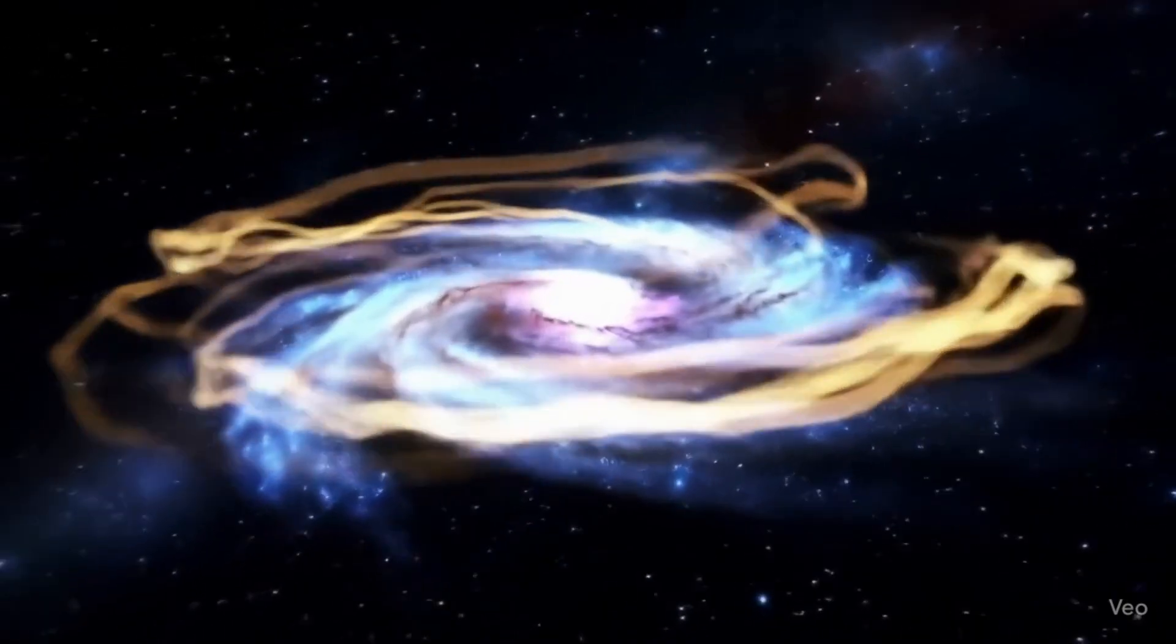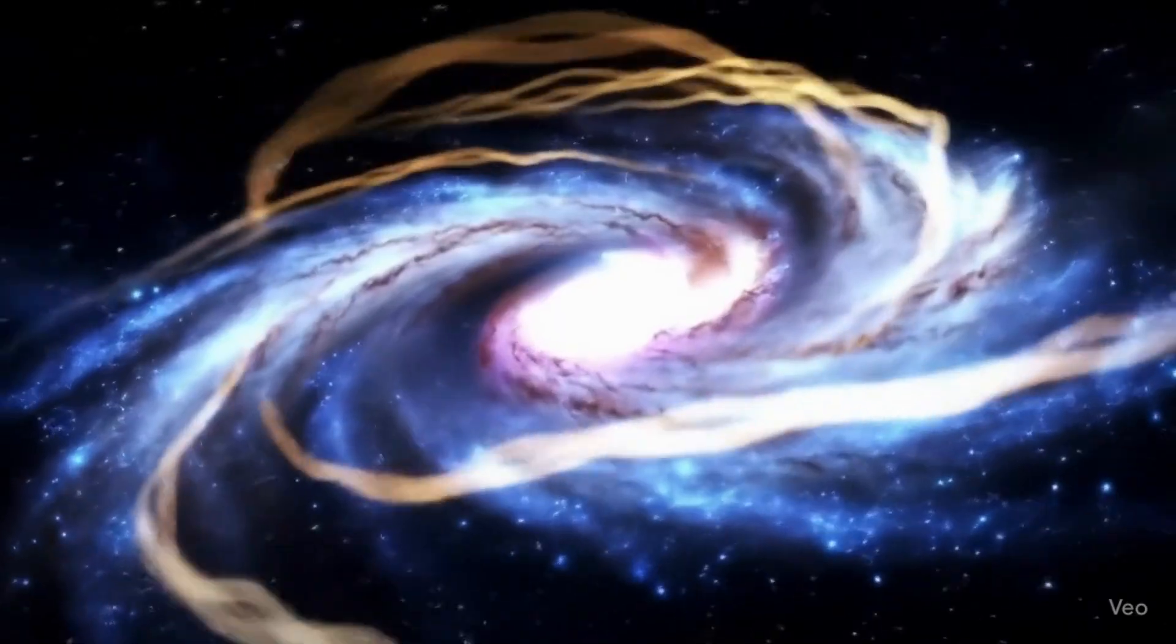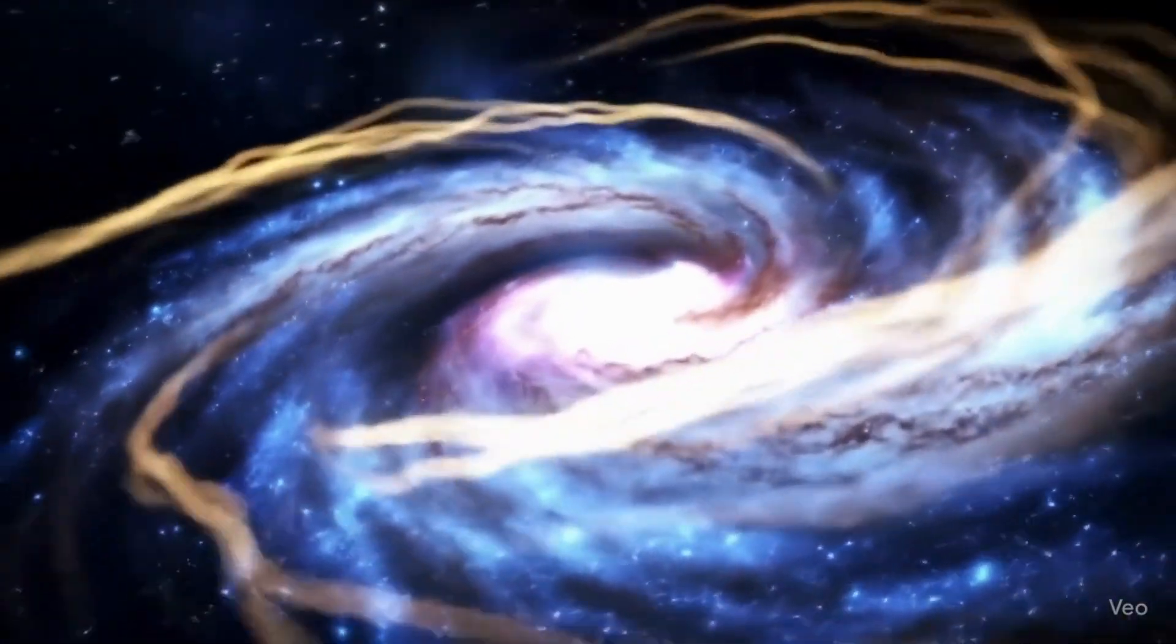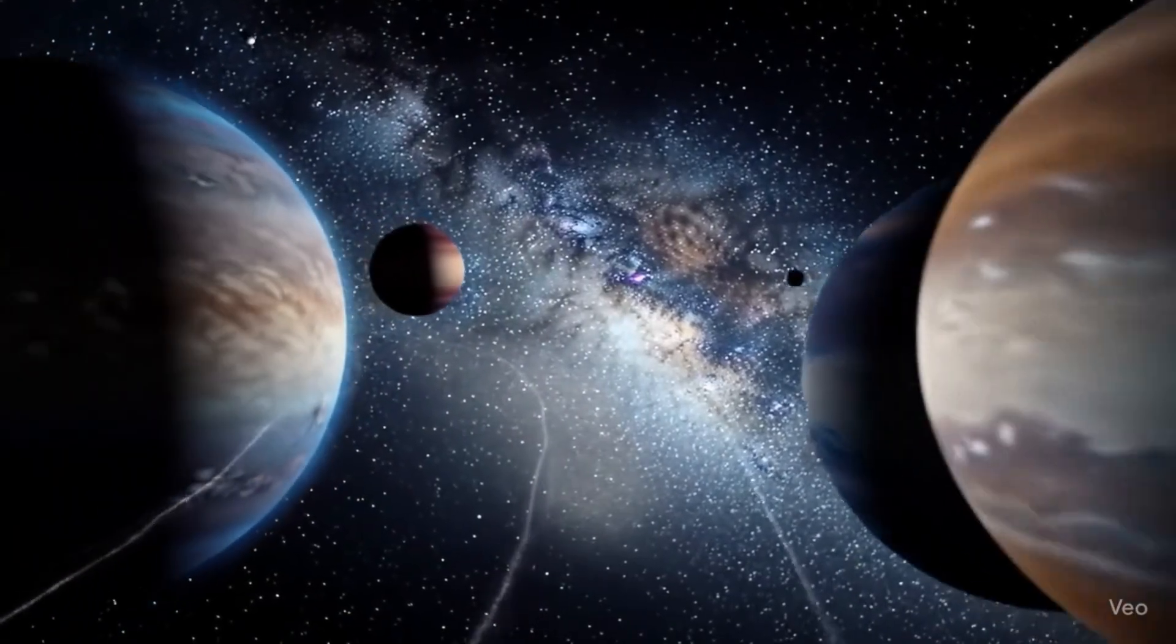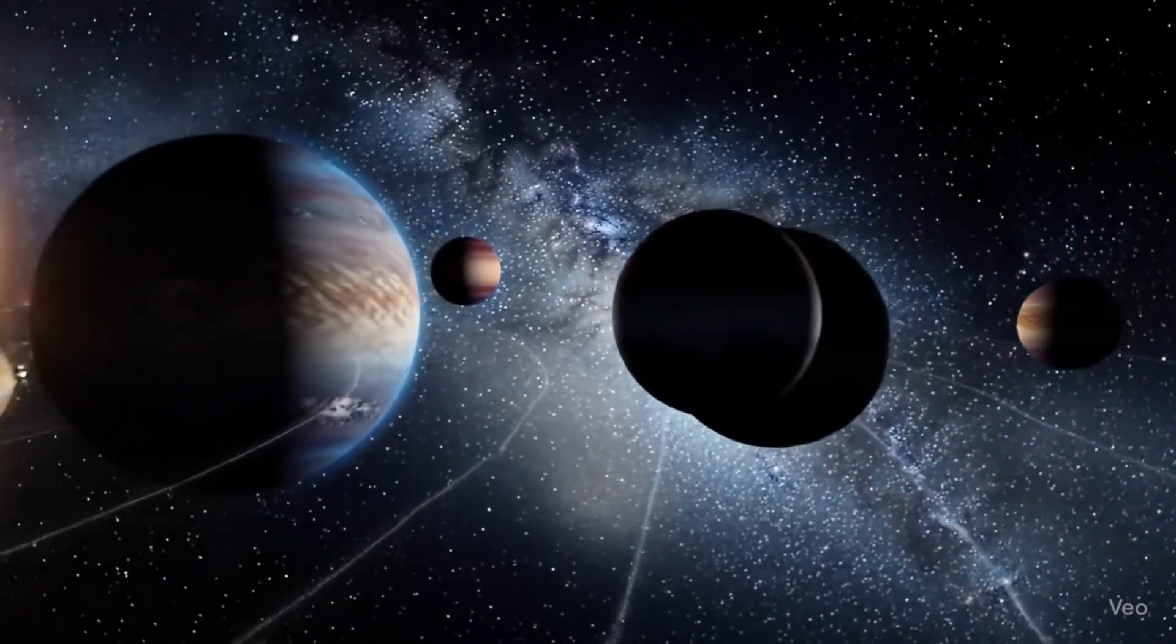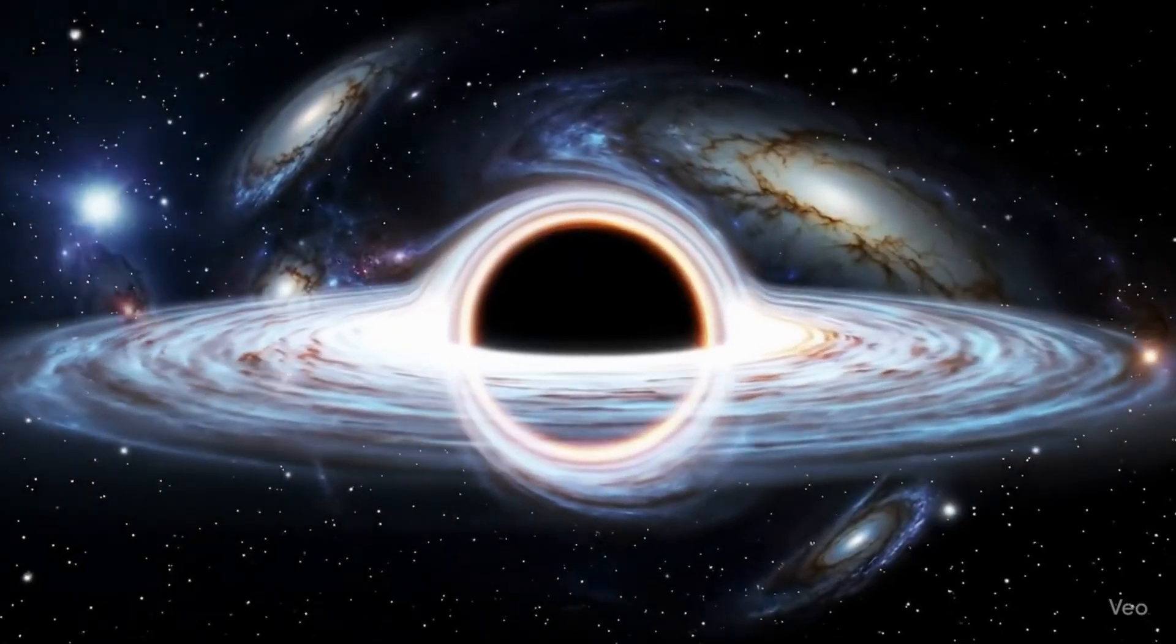Mass and energy warp and curve the space-time fabric, and this curvature is what we perceive as gravity. Think of a bowling ball placed on a stretched rubber sheet. It creates a dip. A marble rolling nearby will be drawn towards that dip. That's essentially how gravity works according to Einstein.